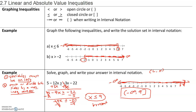For interval notation, we follow the order of our graph. The graph for x ≤ 6 approaches negative infinity on the left, so we write negative infinity on the left side and positive 6 with a bracket on the right. For x > -2, the lowest value is negative 2 but not including negative 2, so we have a parenthesis on negative 2. There is no highest value because the graph approaches infinity, so the interval notation is negative 2, comma, infinity.